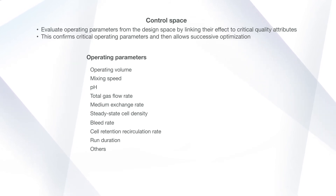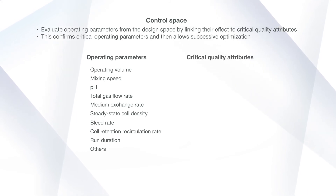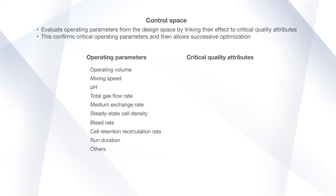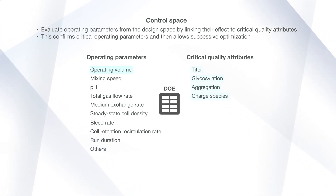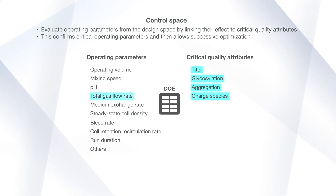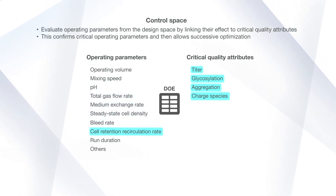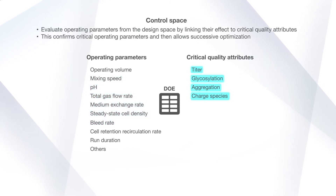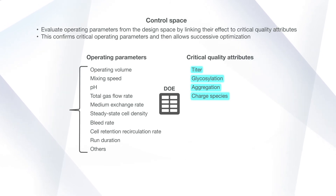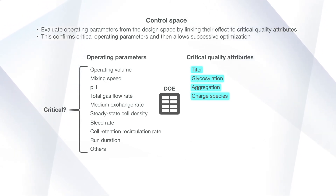After looking at operating parameters, consider which critical quality attributes are important. These are typically oriented around the amount and quality of product generated, using attributes such as titer, glycosylation, aggregation, or charge species. Next, establish a design of experiment, or DOE, to model the effects that the suspected critical operating parameters may have on the critical quality attributes to determine their relationship. This will help you prioritize which of your operating parameters are most critical to your process model.